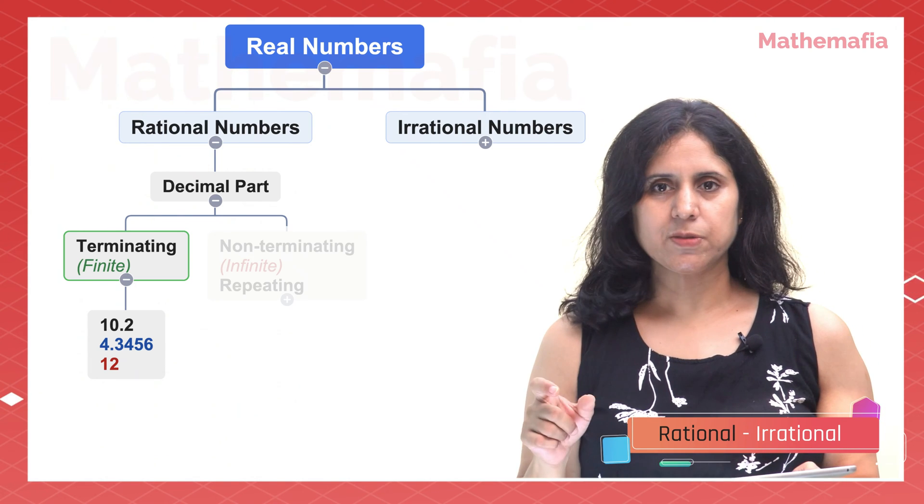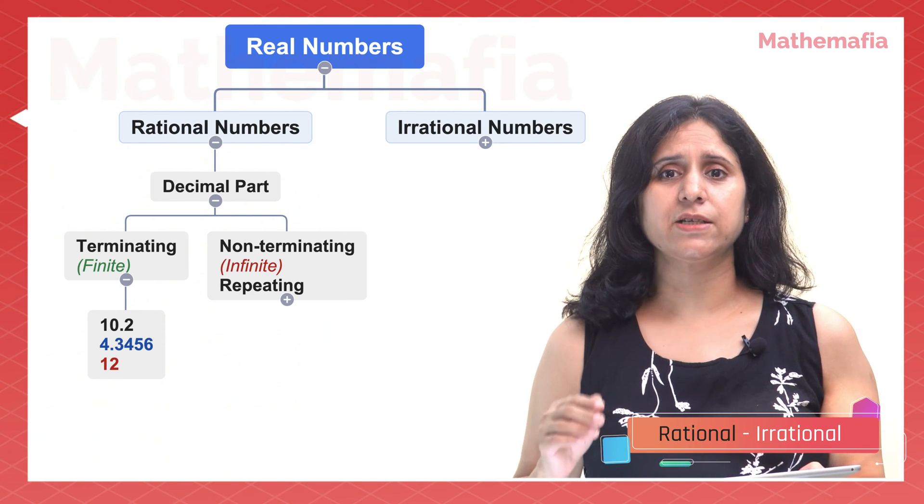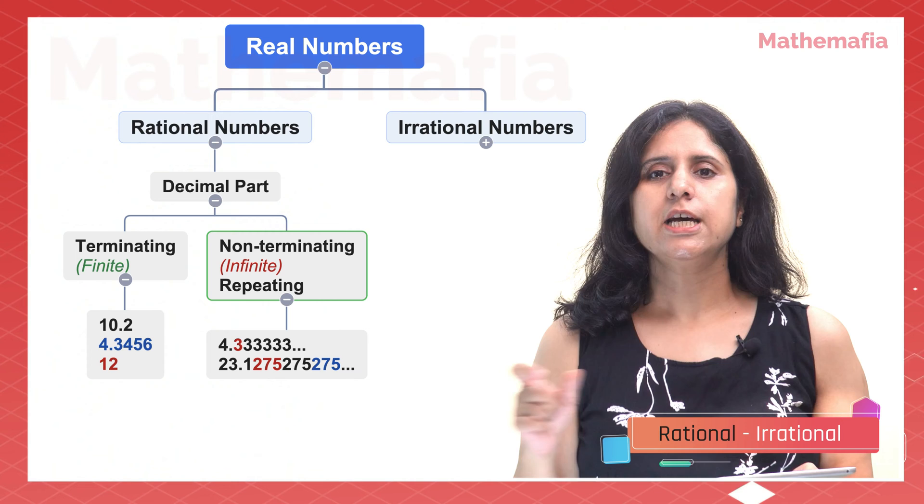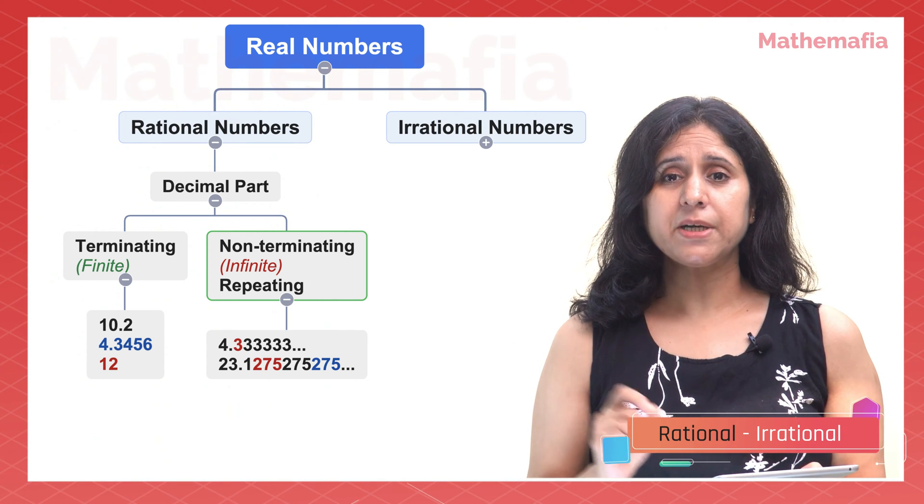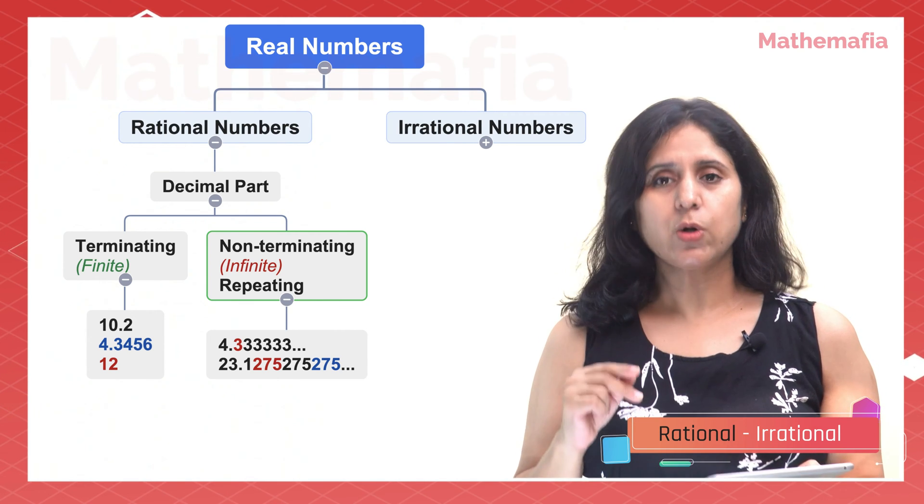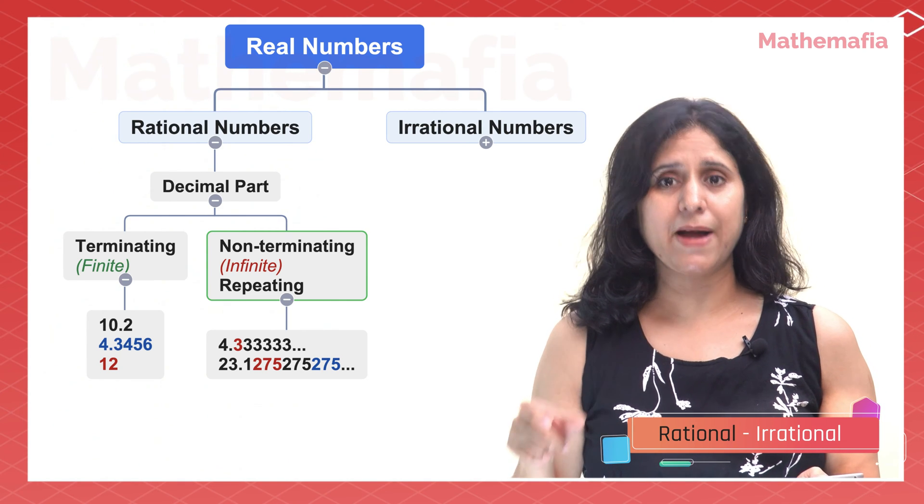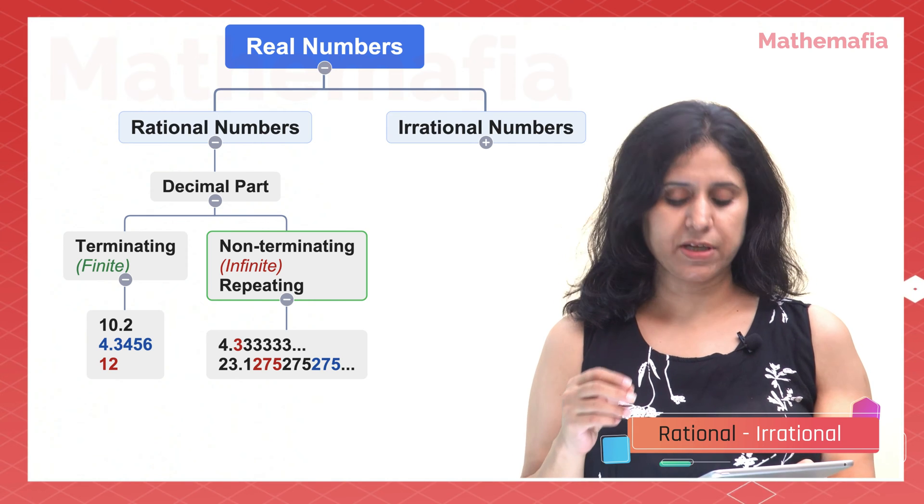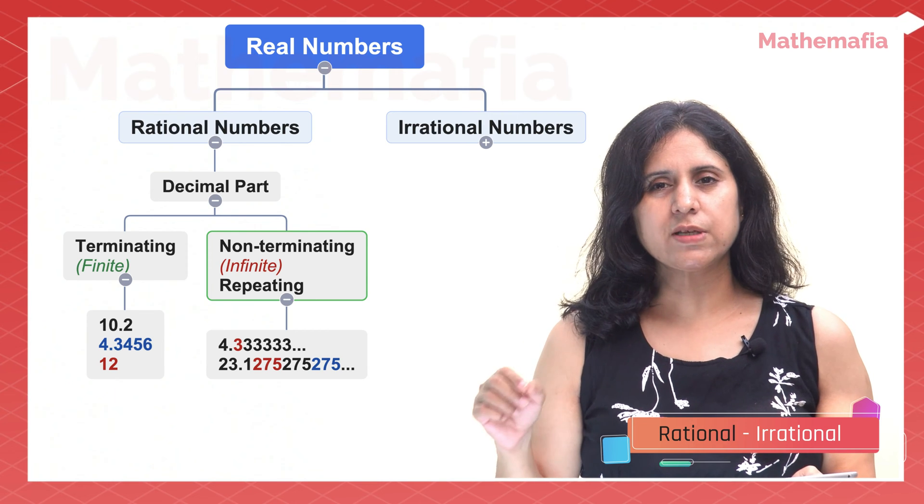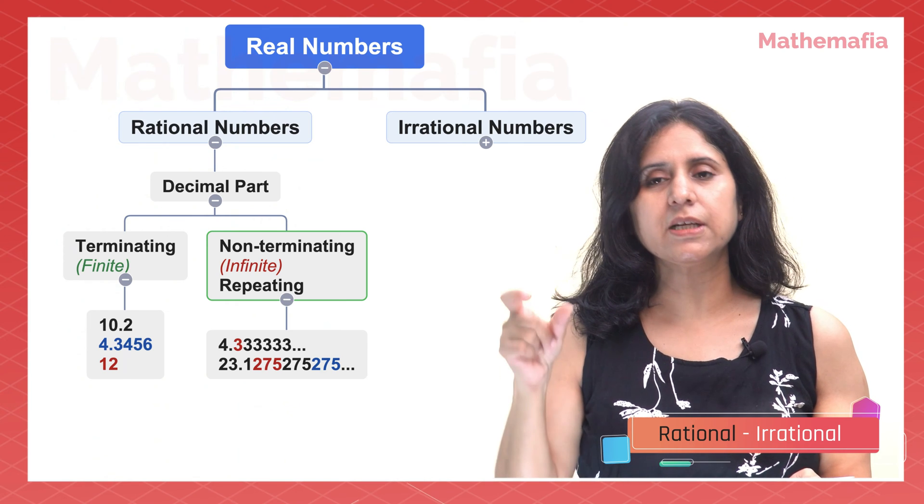It is also possible that the decimal portion of rational numbers is infinite but has a repeating pattern. For example, 4.333333 and so on - the decimal portion is infinite but has just one digit repeating itself infinitely. It's also possible that the decimal portion has multiple digits repeating in a pattern, for example 23.1275275275 up to infinity. Here the decimal portion has the pattern 275 which is repeating infinitely.